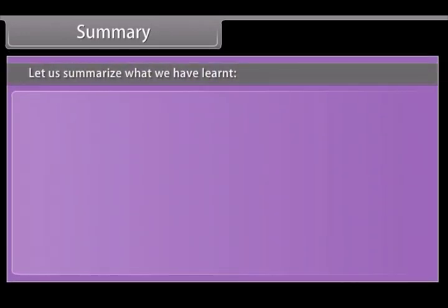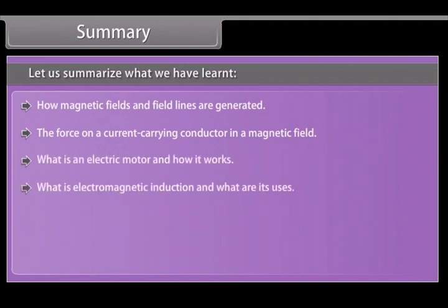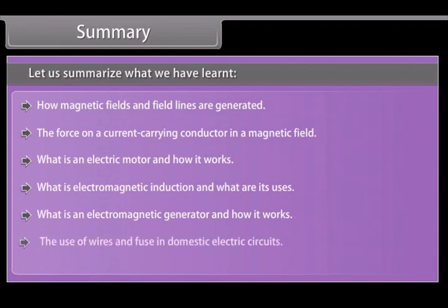Summary. Let us summarize what we have learned: how magnetic fields and field lines are generated; the force on a current carrying conductor in a magnetic field; what is an electric motor and how it works; what is electromagnetic induction and what are its uses; what is an electromagnetic generator and how it works; the use of wires and fuse in domestic electric circuits.